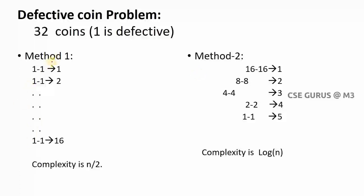I am explaining two methods. In method one, you put one coin on each side of the balance. If both weigh the same, those two coins are not defective. You take another two coins and check again. You repeat this process — since there are 32 coins, you need to check 16 times total.